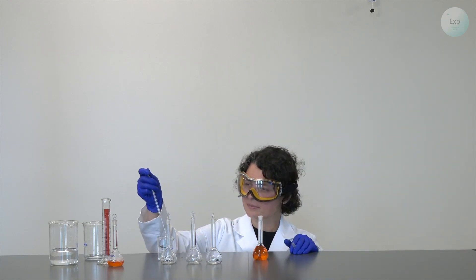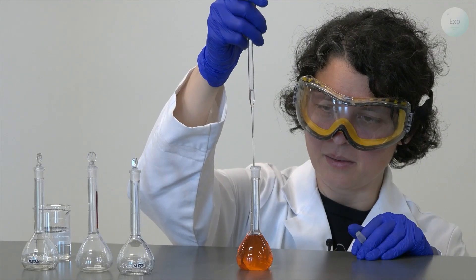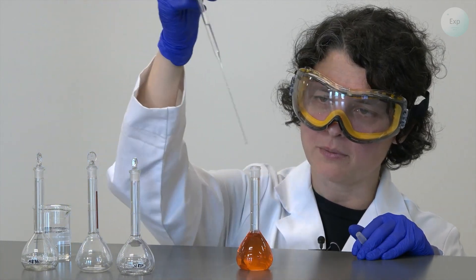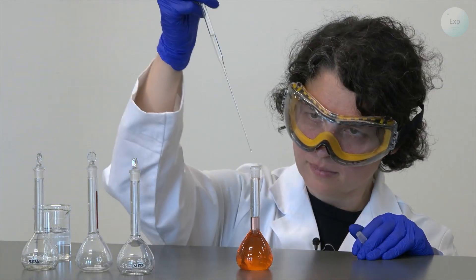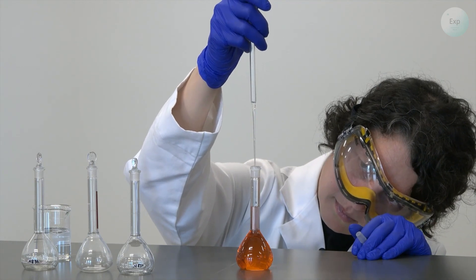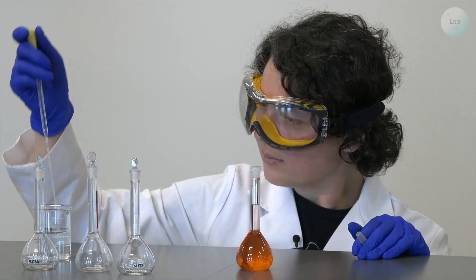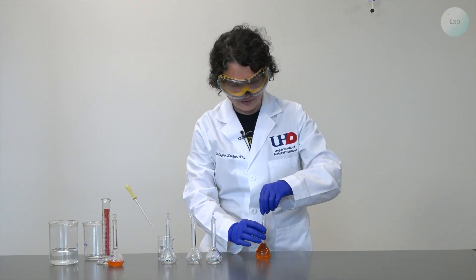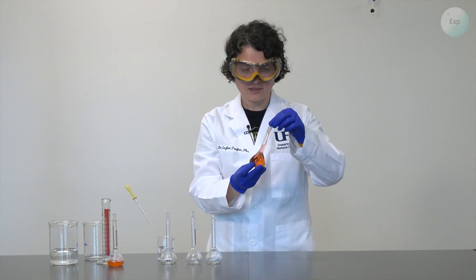We take our pipette, draw some water, and then make sure that we complete the volume of our solution all the way to the 50 milliliter mark. The meniscus of my solution is exactly at the 50.0 milliliter mark. Now I homogenize my solution.